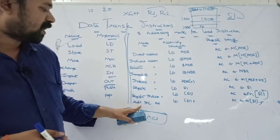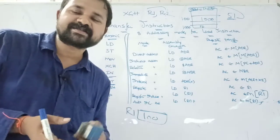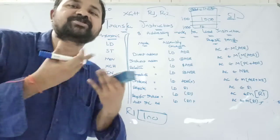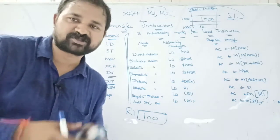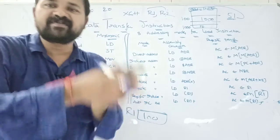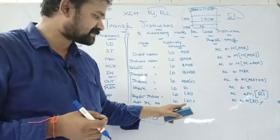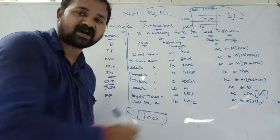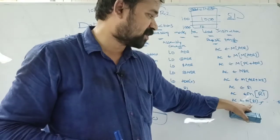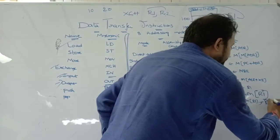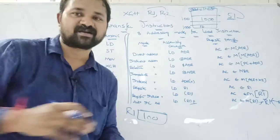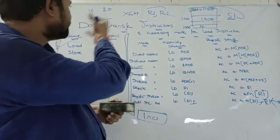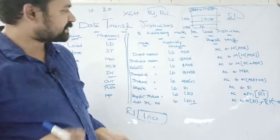Auto increment addressing mode is similar to register indirect addressing mode but follows a post-increment approach — after accessing the content, the register is incremented by 1. It is represented as 'LD (R1)+'. In register transfer form: 'AC ← M[R1]', then R1 is incremented by 1. Similarly, auto decrement can also be represented.